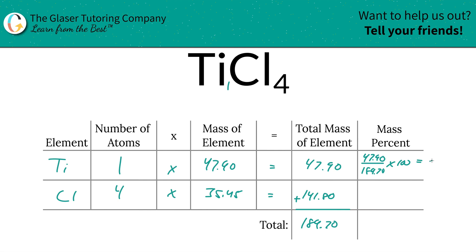Then same thing for chlorine. Take the total mass of that chlorine, 141.80, divided by the total mass of that entire compound, 189.70, and multiply it by 100 to get it in percentage terms. And that's simply going to be 74.75%.